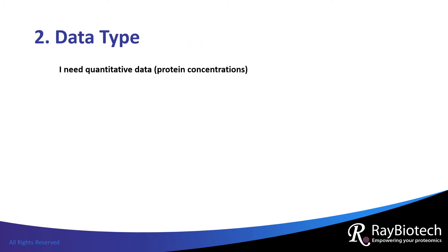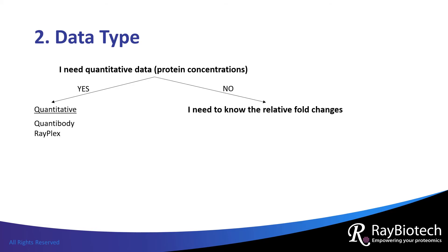Second, what type of data do you need? Do you need quantitative data where the protein concentrations are determined? If so, there are two options: Quantibody and Rayplex. Most researchers who don't need quantitative data need to know the relative protein expression levels across samples, which is considered semi-quantitative data. G series, C series, and L series arrays provide semi-quantitative data.